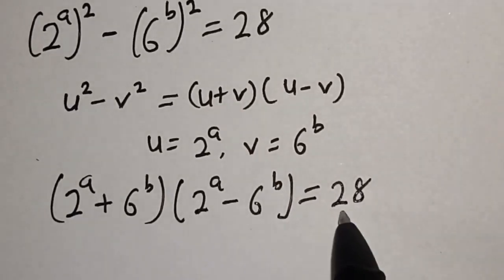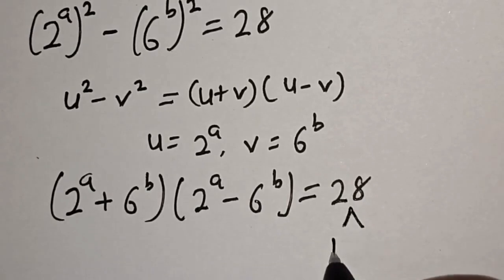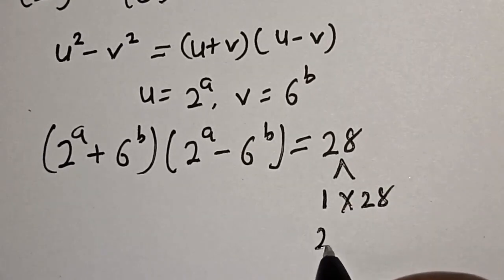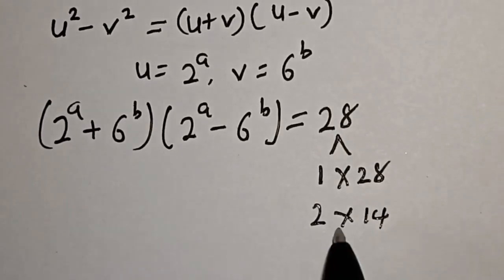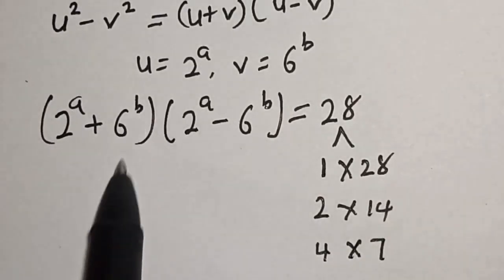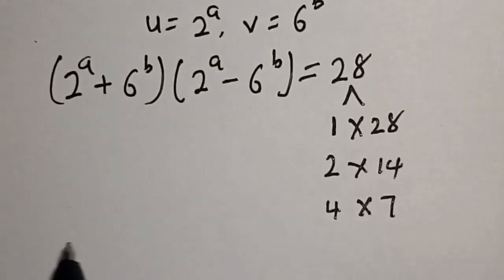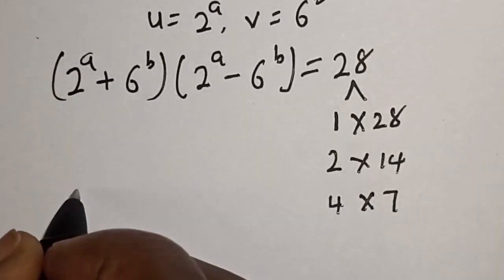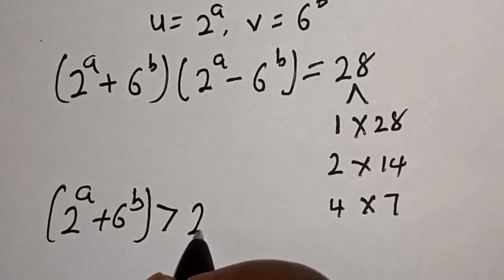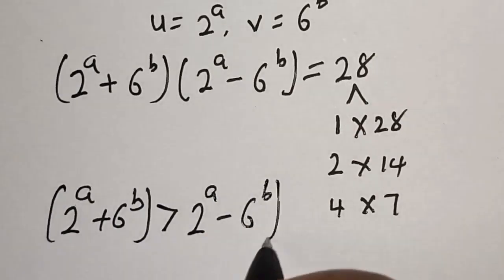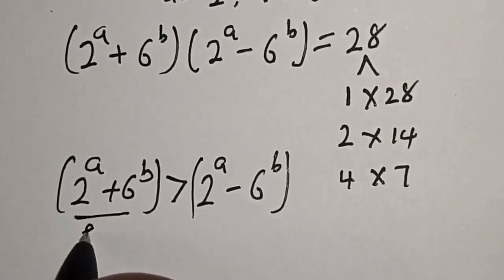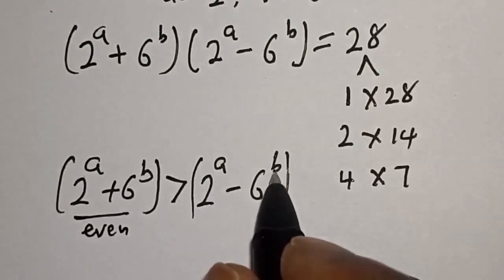Since we are asked to find the positive integer solution, 28 can be written as 1 times 28, then 2 multiplied by 14, and 4 multiplied by 7. Note that 2 to the power of a plus 6 to the power of b is greater than 2 to the power of a minus 6 to the power of b, and both expressions are even.